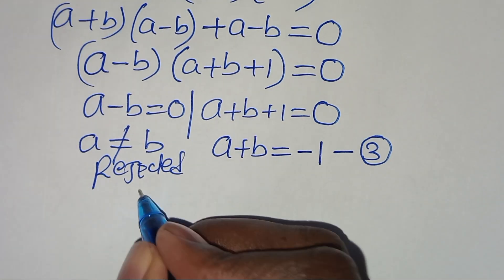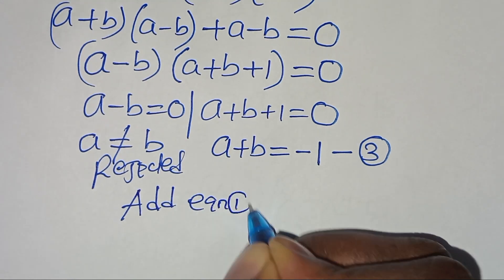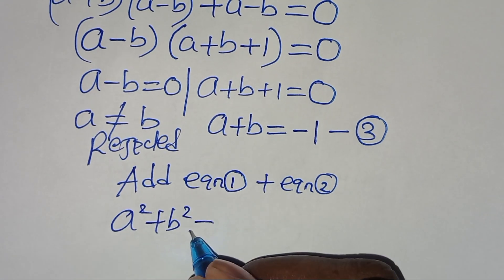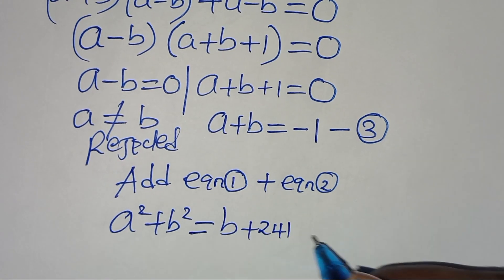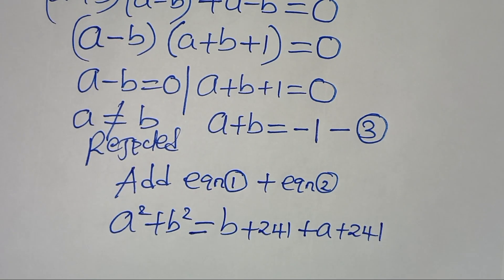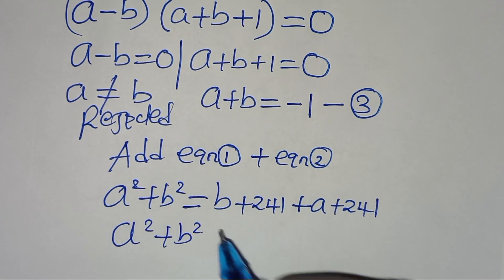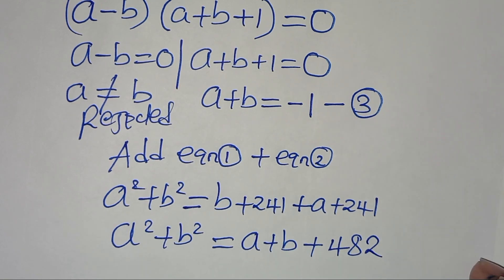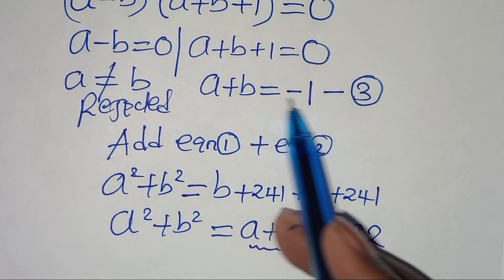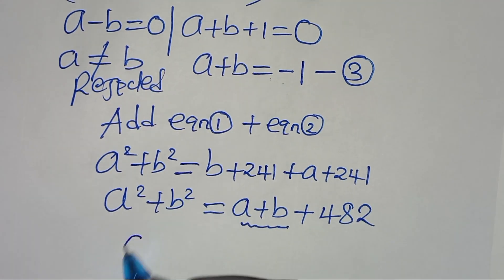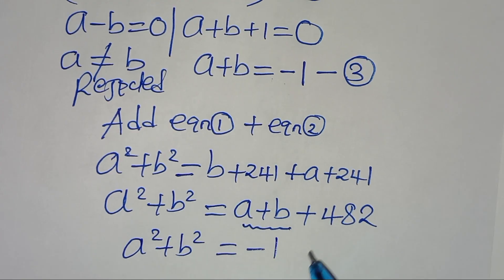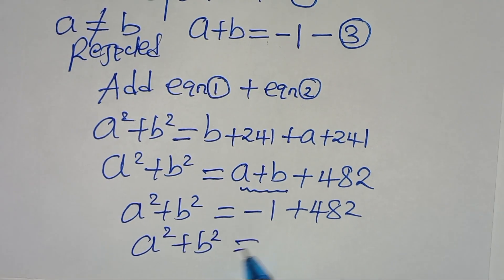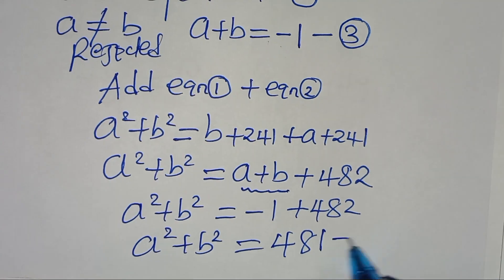The next step is to add equation 1 with equation 2. So a squared plus b squared equals b plus 241 plus a plus 241. This simplifies to a squared plus b squared equals a plus b plus 482. Substituting equation 3, a plus b equals minus 1, we get a squared plus b squared equals minus 1 plus 482, which equals 481. Let's call this equation 4.